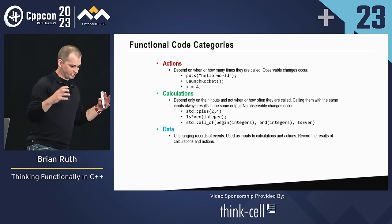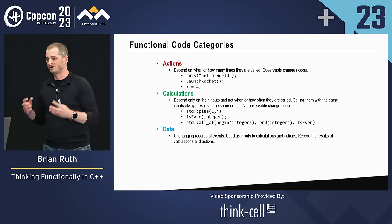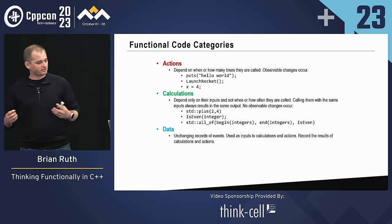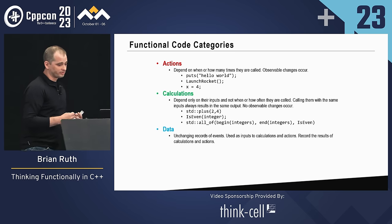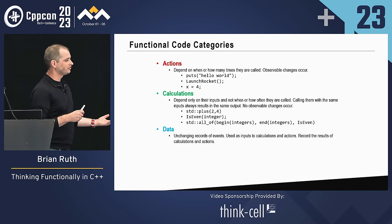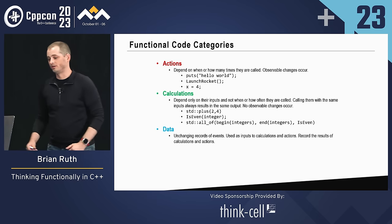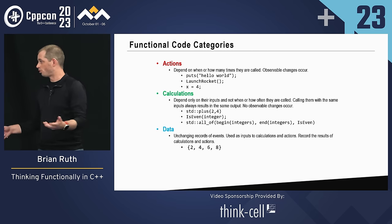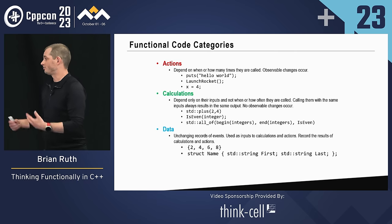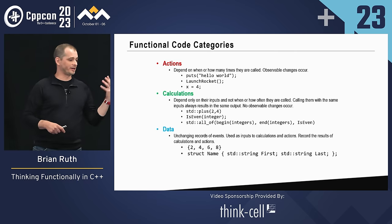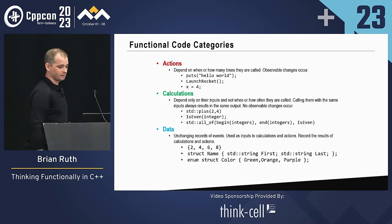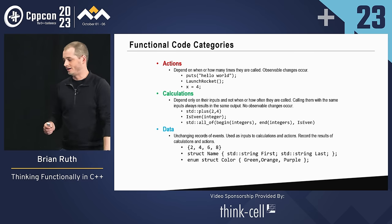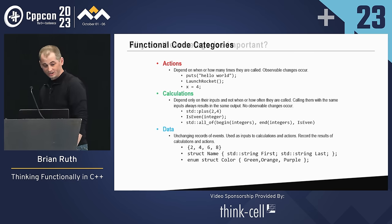The final category underpinning all of this is data. In functional programming, you'll hear a lot about immutability and never changing things. Data is going to be unchanging records of events — it's going to be used as inputs to calculations and actions, and it's going to record the results of those calculations and actions. Examples include a list of numbers, a name struct with first and last name, or a struct that is one of three colors: green, orange, purple.